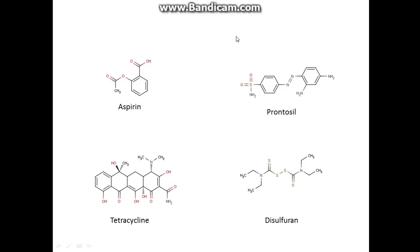A few examples here. Aspirin comes from acetylsalicylic acid — it's easy to see that. That comes from willow bark originally, though it's quite easy to synthesise now. Prontasil is actually from the dye industry — it's one of the first recognised antibiotics and is an azo dye.